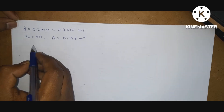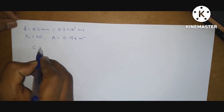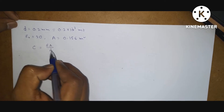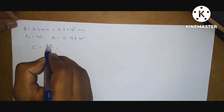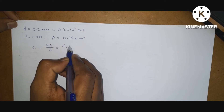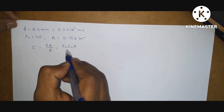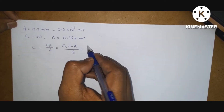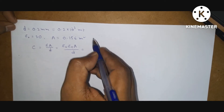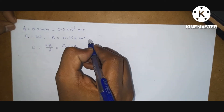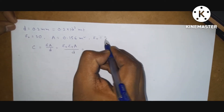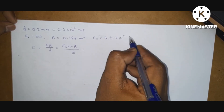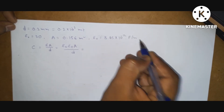Now, what is the formula for capacitance? C is equal to Epsilon A by D. Write this: Epsilon naught into Epsilon r, A by D. Substitute these values in this equation. What is Epsilon naught? Epsilon naught value is 8.85 into 10 power minus 12 Farad per meter.